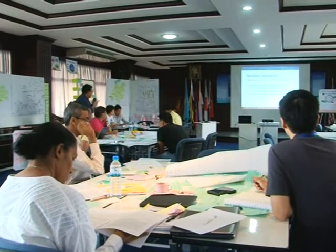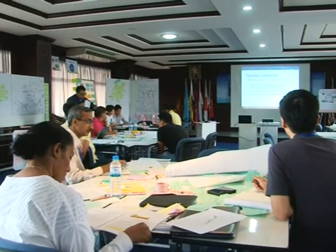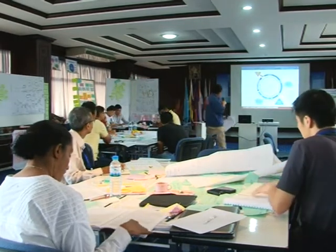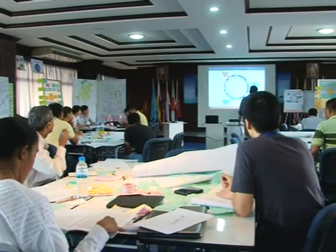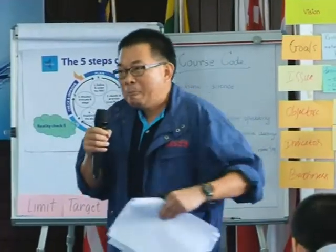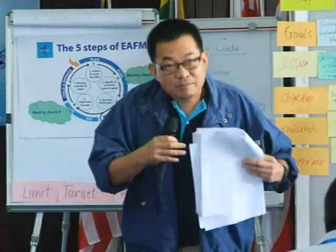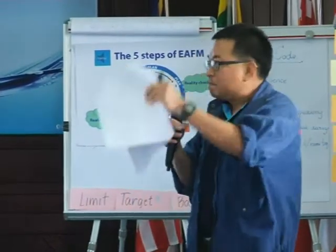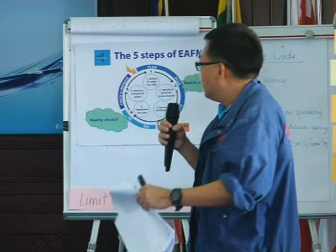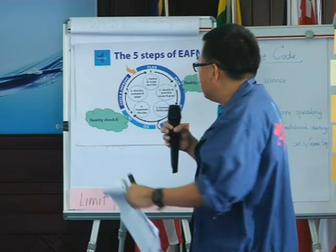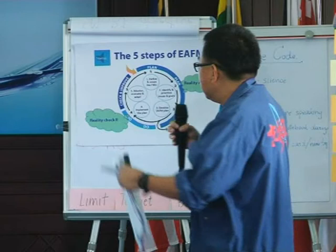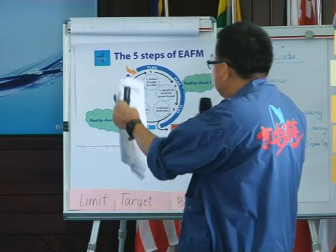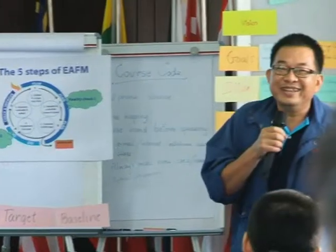This is where we are. I like this picture very much — we call it the PDCI cycle: plan, do, check, improve. When I deal with my wife, I think about plan, do, check, improve to solve problems of the family. It can be used in many kinds of job planning processes, but so far we are focusing on fishery.